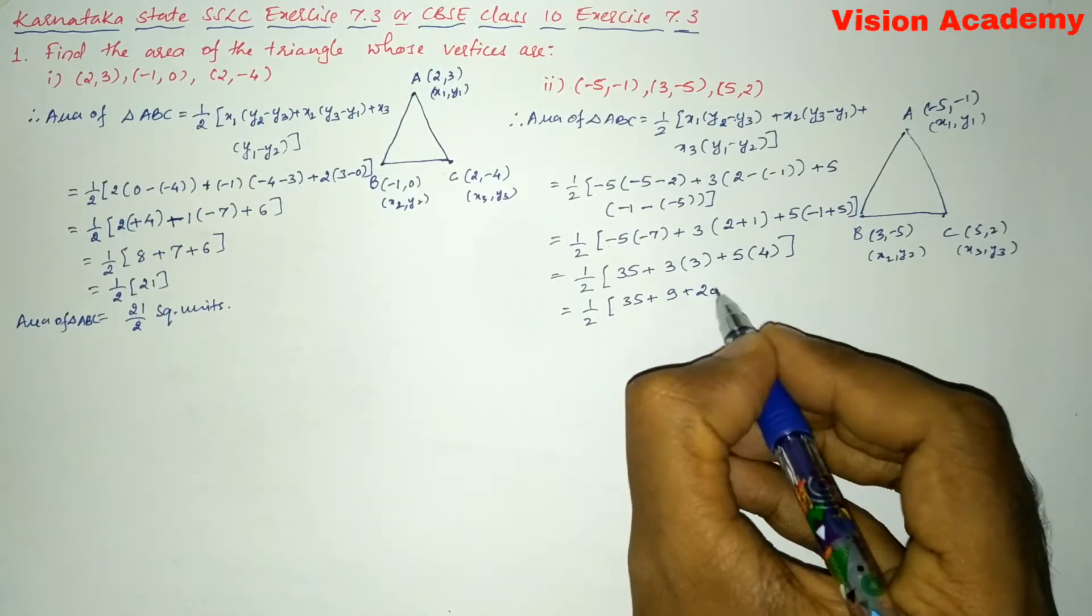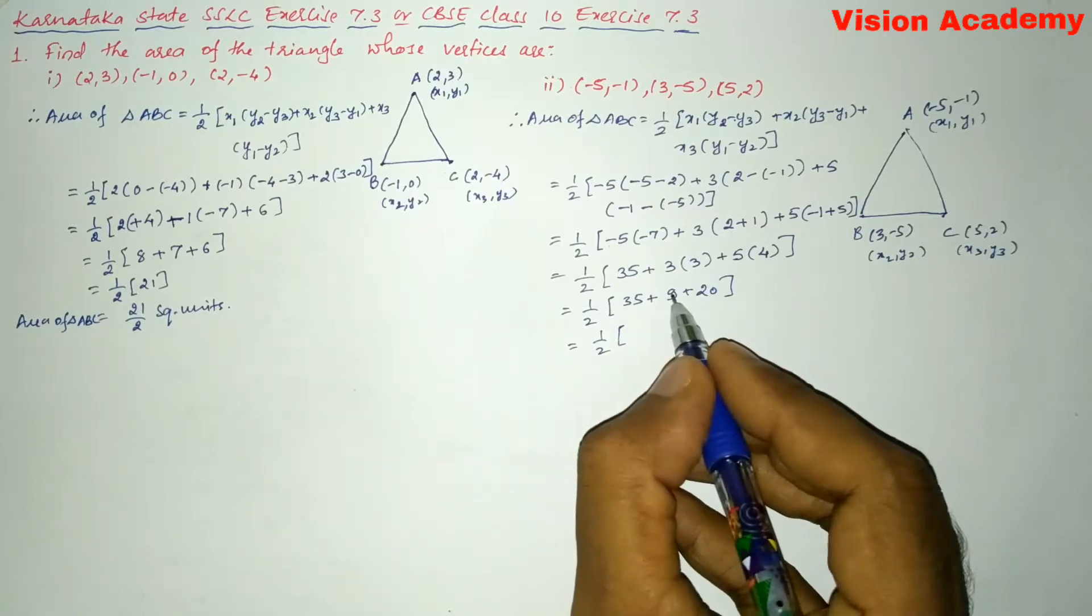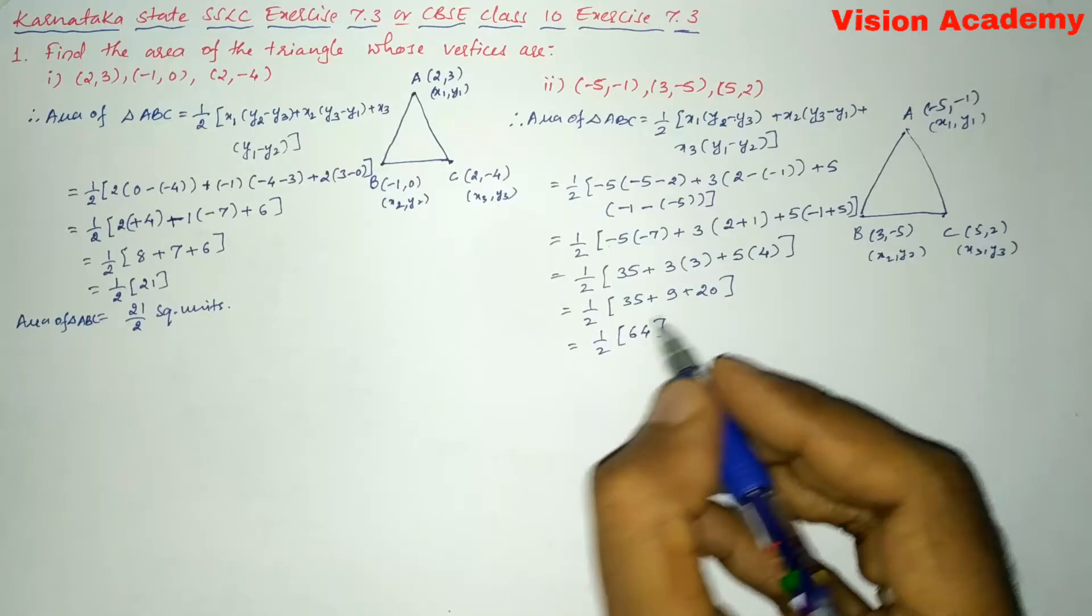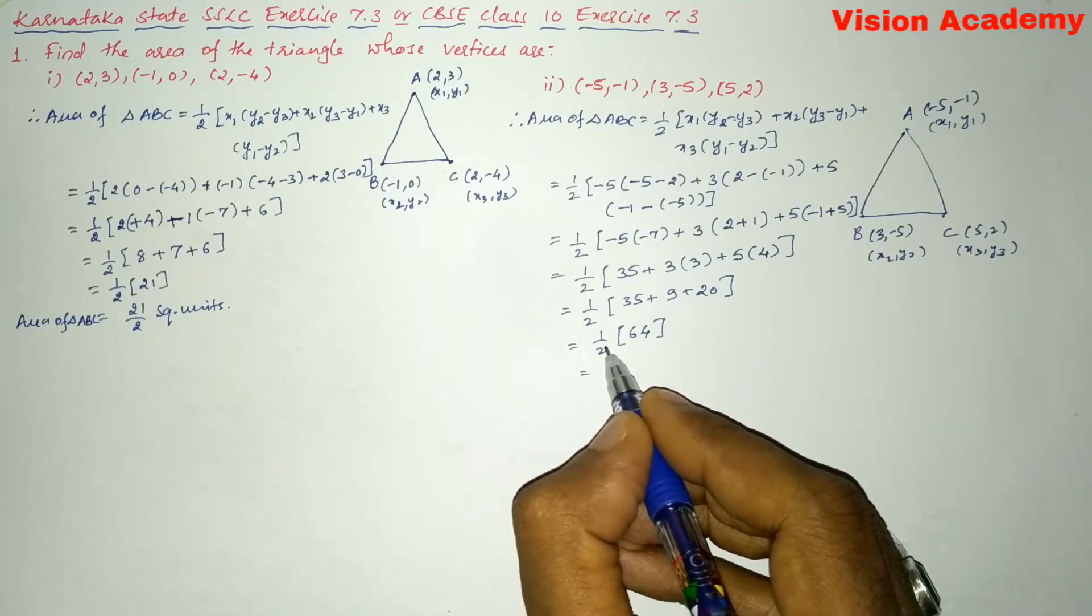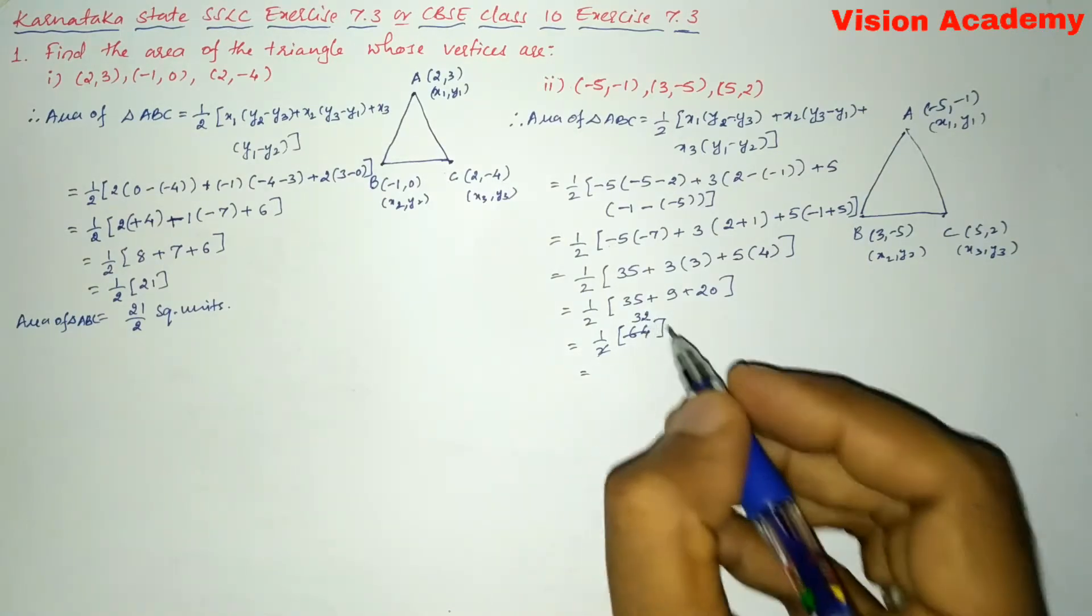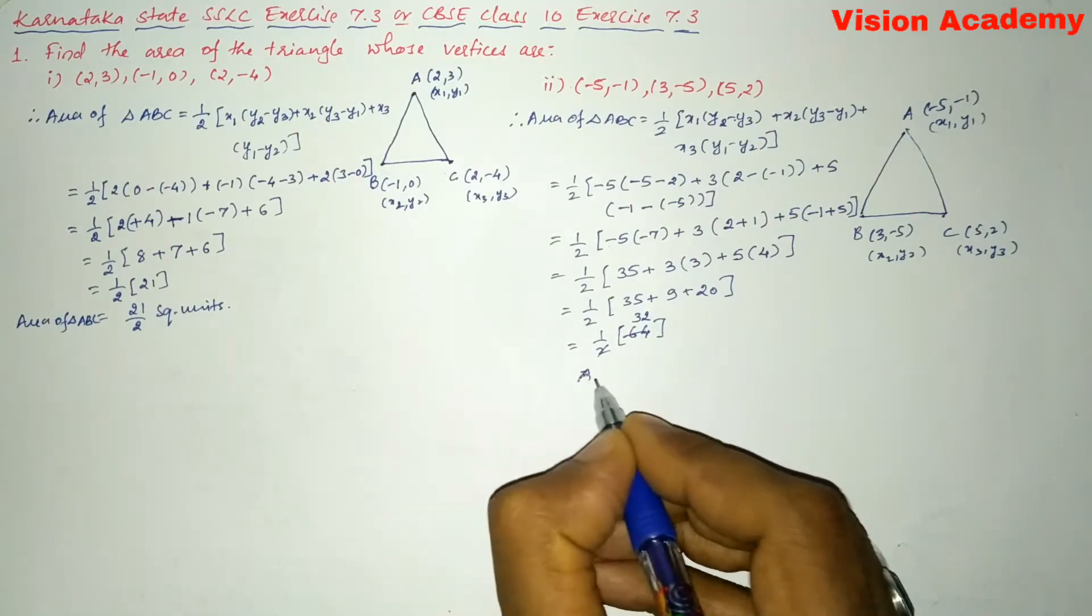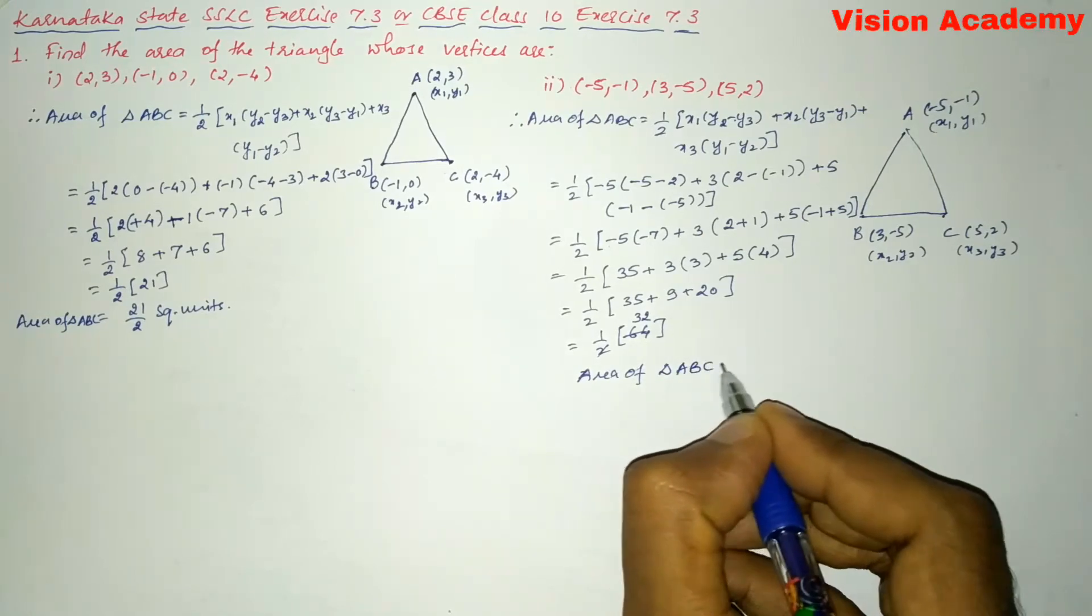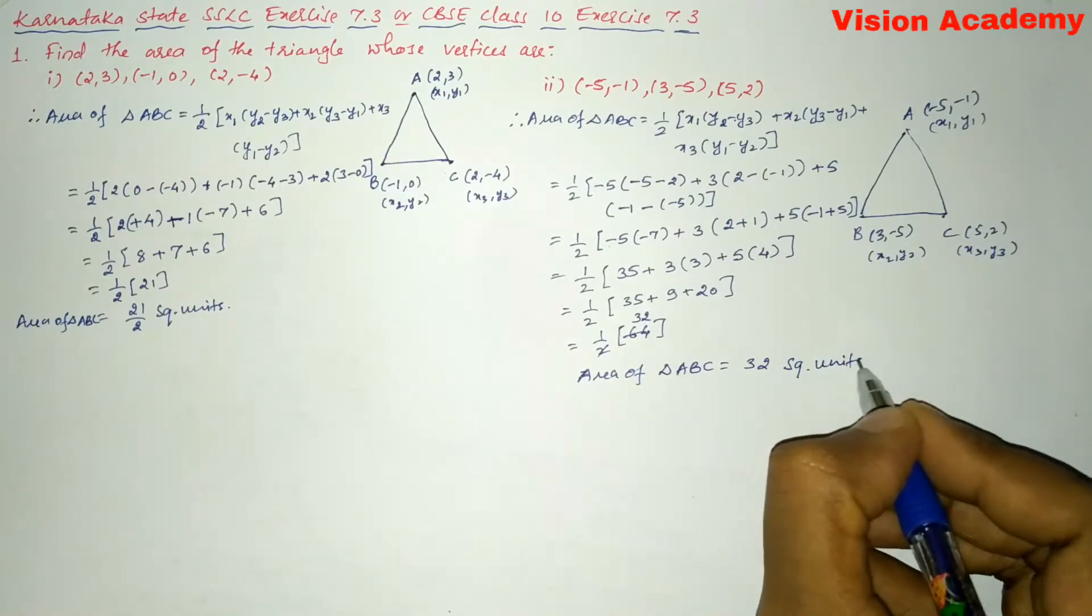Next we will further simplify: 1/2 into (35 + 9 is 44 plus 20 is 64). Now let us further simplify, 64 divided by 2 is 32. So here area of triangle ABC is equal to 32 square units.